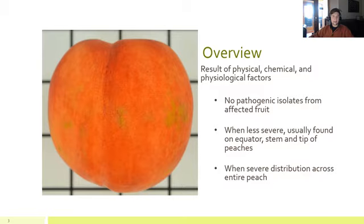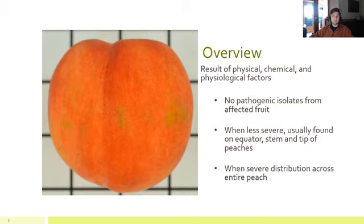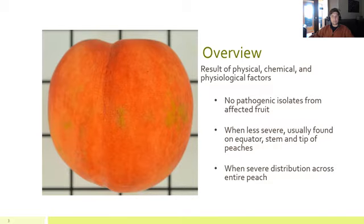When less severe, the symptoms typically appear around the circumference or equator of the peach, as well as the stem and tip sides. But when more severe, you can see the discoloration across the entire surface area of the peach. To date, there's been limited published studies on the causes of bronzing. Suspects have been early season thrip damage, fungicides applied close to harvest, abrasion, rough handling during harvest and post-harvest procedures, and chemical reactions in the hydrocooling water.